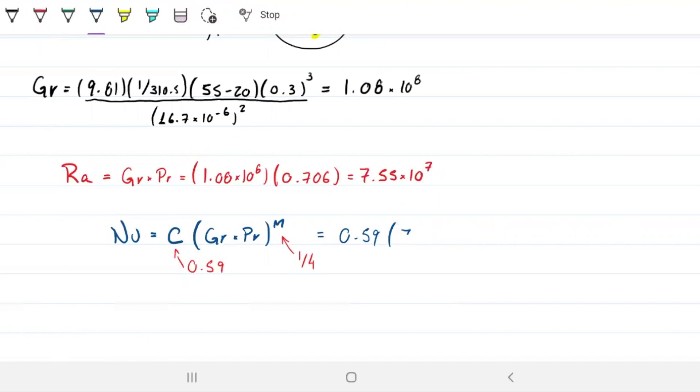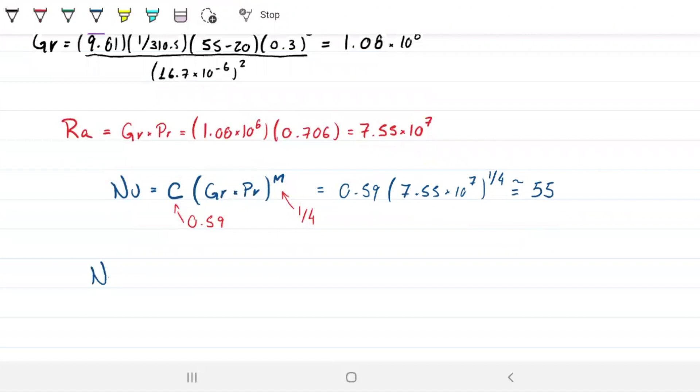So Nusselt will be 0.59 times Grashof times Prandtl - that's Rayleigh, so we already have that - to the quarter. Nusselt equals 54.99 something, so let's go ahead and do 55. And we know Nusselt is equal to h times characteristic length divided by K, and characteristic length in this case is the length of the plate. So therefore, h equals 4.95 watts per meter squared Kelvin.